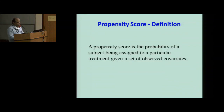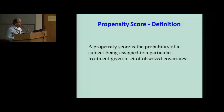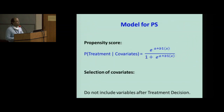The propensity score is the probability of a subject being assigned to a particular treatment. If we deal with two treatments — one newer, one standard of care — what is the probability that I would get the new treatment given my covariates: my age, comorbidities, and so on? For each patient there is a probability associated with having received that treatment. Please remember this is a model for getting a treatment, not for the outcome. The probability ranges from 0 to 1, or 0 to 100%.